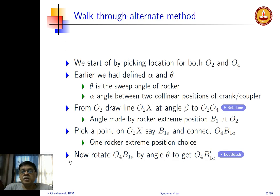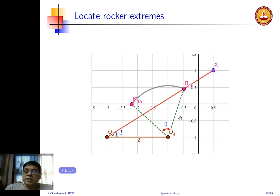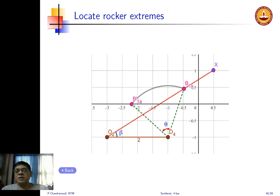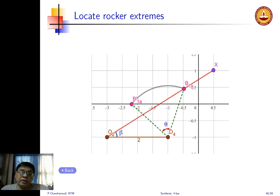We are going to locate the floating pivot corresponding to the rocker on this line. We pick a point B1a and connect O4 to B1a — that is one choice. Along O2X I have selected B1a, and given the angle theta, that locates B'1a for me. The dashed green line and the lower dashed line represent the rocker extremes — this is one possible design. Now this choice of B1a is entirely arbitrary. You could stop here and say you already have a crank rocker design, but we have not yet brought the angle alpha into the design.